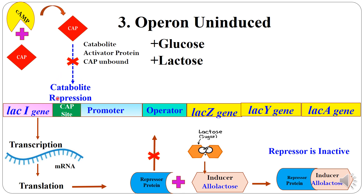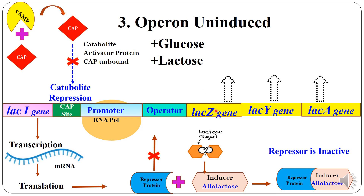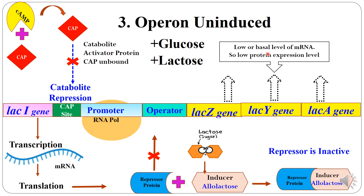Due to catabolite repression, the RNA polymerase will bind to the promoter but with reduced efficiency. As a result, the lacZ, lacY, and lacA structural genes are transcribed only at very low or basal levels of mRNA, leading to low protein expression. Consequently, the three structural genes of the operon are expressed only at basal levels, so lactose remains poorly utilized.